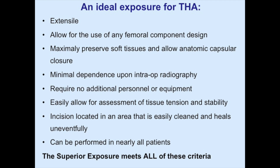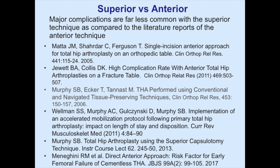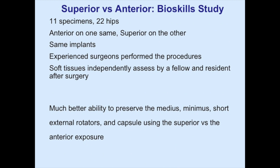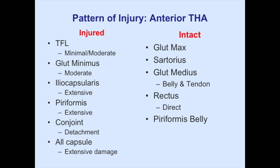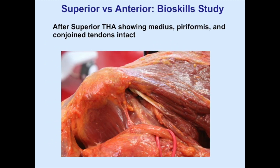If you look at superior versus anterior, the literature is becoming more complete that these types of exposures have much lower complication rates on every major frequency compared to anterior. We looked at this at BioSkills: 11 cadavers, 22 hips — anterior on one side, superior on the other — with experienced surgeons on both, independently analyzed by fellow and resident. The superior approach is much better at preserving the medius, minimus, short rotators, and capsule compared to anterior. The injured tissues from the anterior are quite extensive, even on the posterior side. This photograph from a post-op superior hip shows the entire operation was done through the piriformis and conjoint tendon.